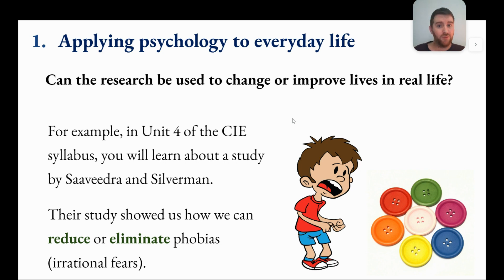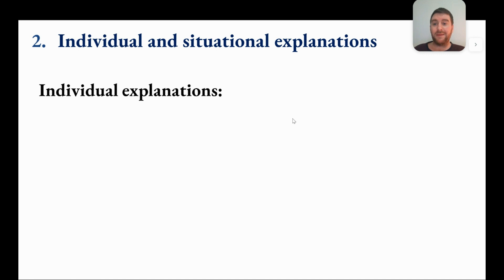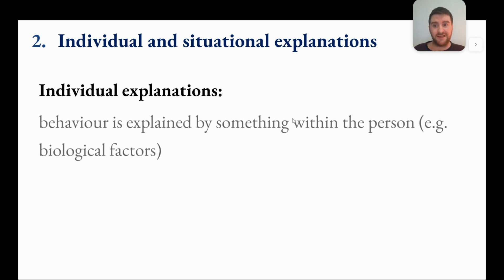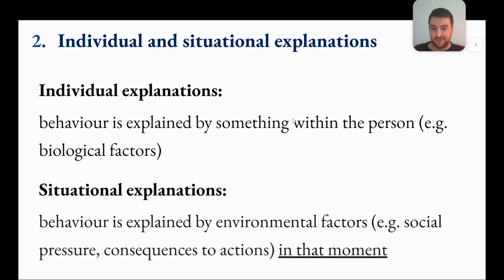The second issue — well, this one's a debate — is individual and situational explanations. This boils down to how we explain people's behavior. We can go with individual explanations, explaining behavior based on something within them: personality, biology, whatever it is. Or situational explanations, which explain behavior using environmental factors such as social pressure — what is around them, what situation are they in at that moment when they do the behavior.